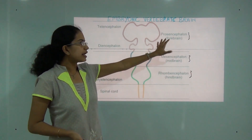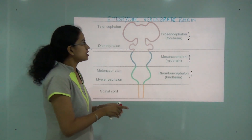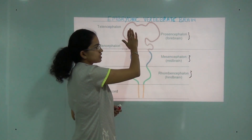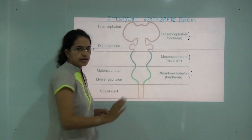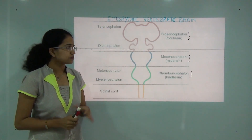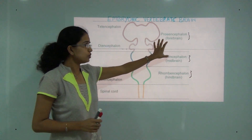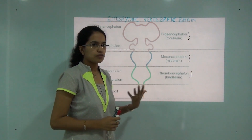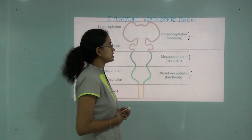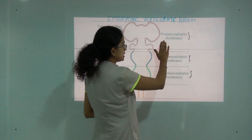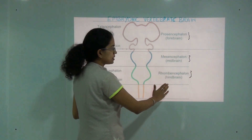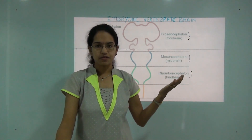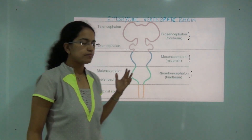Around eight weeks, we can say that the forebrain can be differentiated into left hemisphere and right hemisphere. This is how the development sequence of the brain plays. Now when we study the forebrain, midbrain, and the hindbrain, let's first understand it with the human brain.